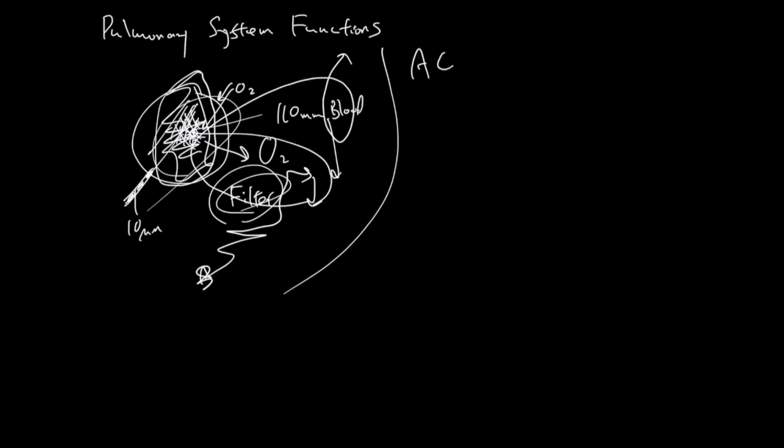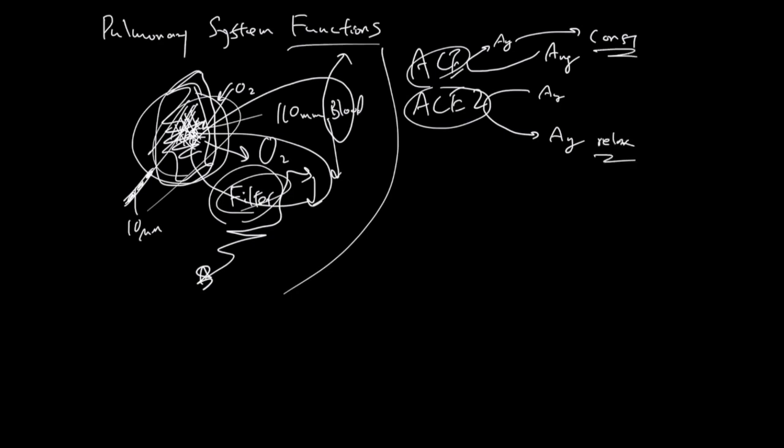Next lung function is ACE1 and ACE2, and these are enzymes working against each other. Angiotensin, when it touches ACE1, becomes another form of angiotensin that favors constriction. And other angiotensins touch ACE2 and become another form of angiotensin that favors unwinding. This constriction-unwinding balance of function is common to the lung.